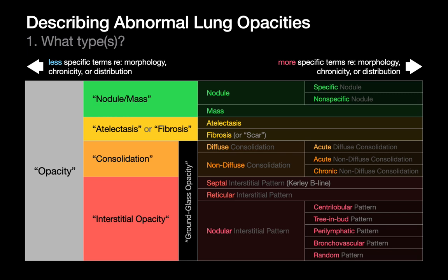We'll get into more detail about these terms as we go through future talks. One term worth pointing out here is ground glass opacity, which you may have heard of. Ground glass opacity shouldn't be considered a fifth type of opacity, but rather a situation where consolidation is partial so you can kind of see through it, or the interstitial opacities are so fine they're below the spatial resolution of the pixels on an image. Ground glass opacities are a special situation of consolidation or interstitial opacity.